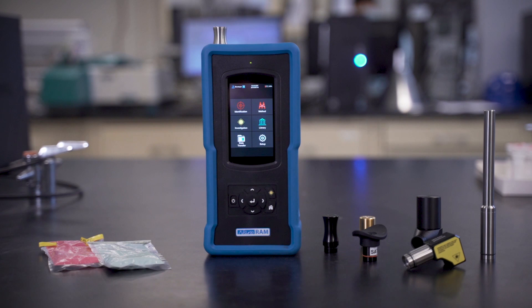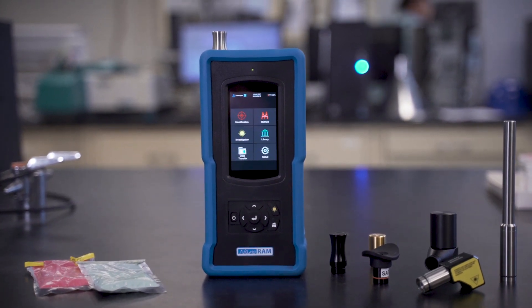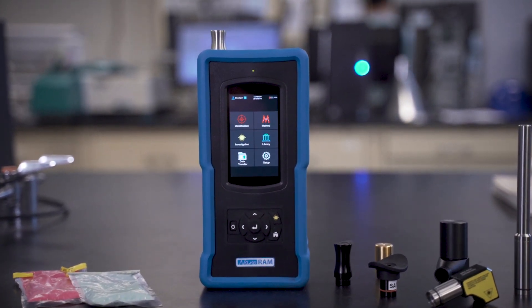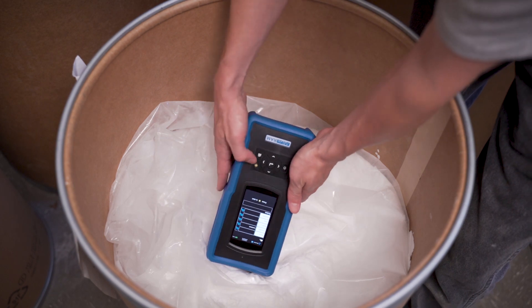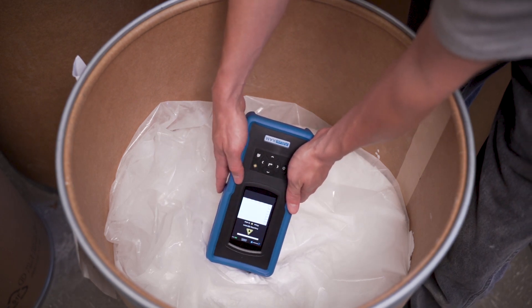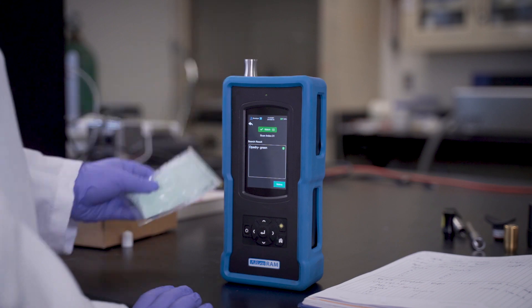The NanoRAM 1064 is the handheld Raman instrument for non-destructive identification and verification of incoming pharmaceutical raw materials such as APIs, excipients, and intermediates.